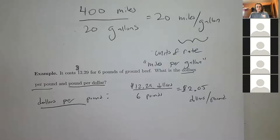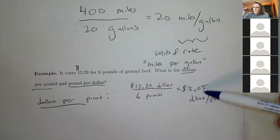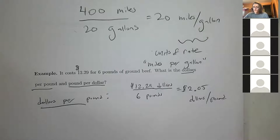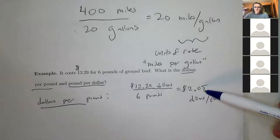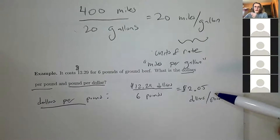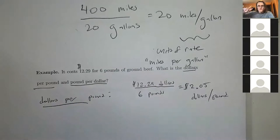Make sure you understand what that means in context: you're paying $2.05 per pound of meat. This is useful at a grocery store to find the best value — you find dollars per ounce or per pound for each option and compare.